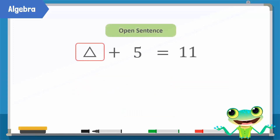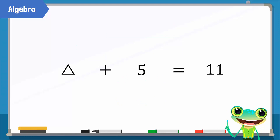In general, an open sentence can either be true or false. The delta in an open statement can be replaced by any alphabet to denote the unknown number. So, delta plus 5 equals 11 can be written as a plus 5 equals 11, or x plus 5 equals 11, etc.